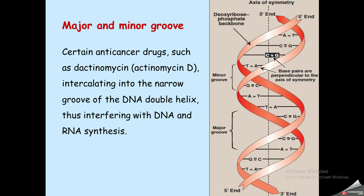When DNA forms the double helix or twisted ladder, it creates major grooves and minor grooves. Some factors intercalate with the minor grooves, such as Dactinomycin D, which is an anti-cancer chemotherapy drug. Dactinomycin D binds to the minor grooves of the DNA, causing the two strands to remain attached and preventing denaturation.